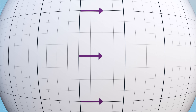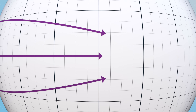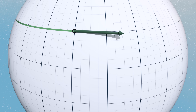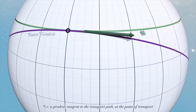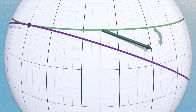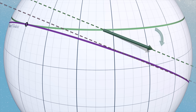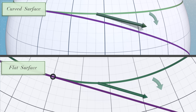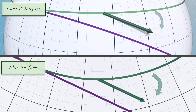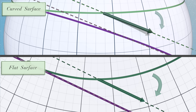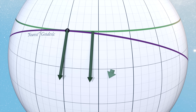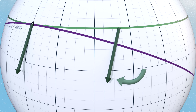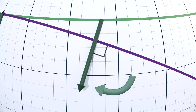Indeed, since geodesics define a notion of parallelism on a curved surface, then for parallel transporting a vector along any given path on that surface, we need only draw the nearest geodesic. And we can at once understand that the vector will twist so as to try to stay as parallel as possible to that geodesic, mimicking exactly what would happen in flat space. Or, should the vector not initially be oriented along the direction of the transport path, then it will twist so as to try to maintain the initial angle that it shared with the geodesic before it underwent transport.